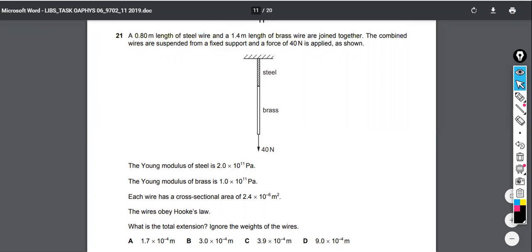So 10 to the 9 is giga, and so you could write this as gigapascals. This would be what, 200 gigapascals, 100 gigapascals.